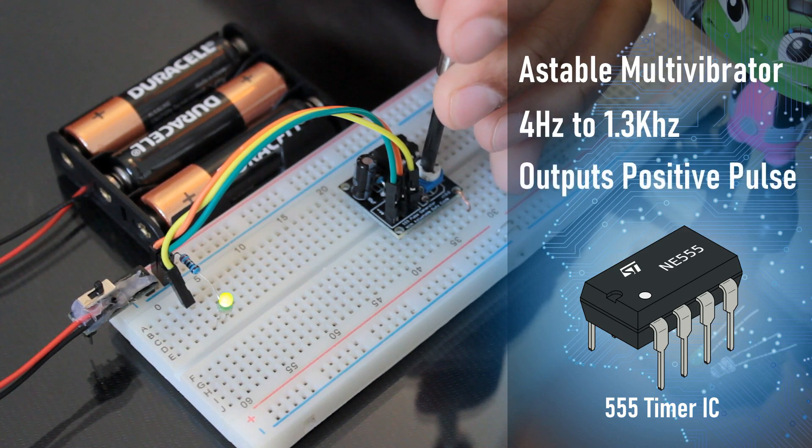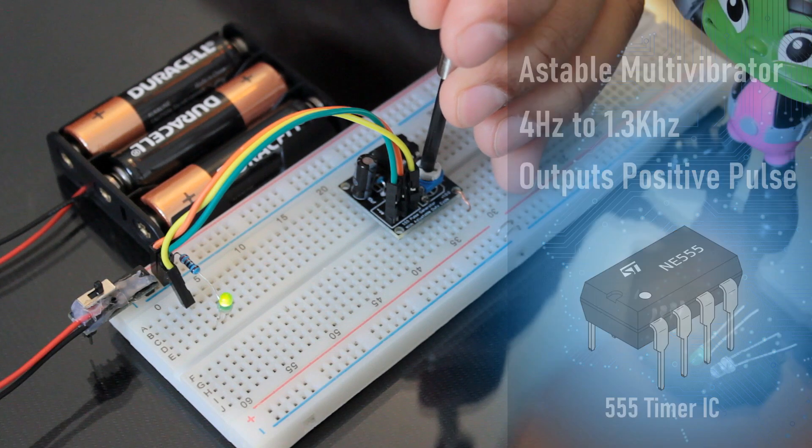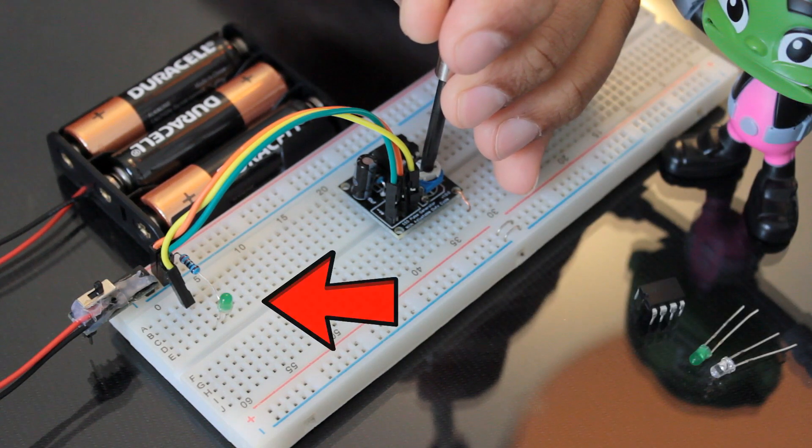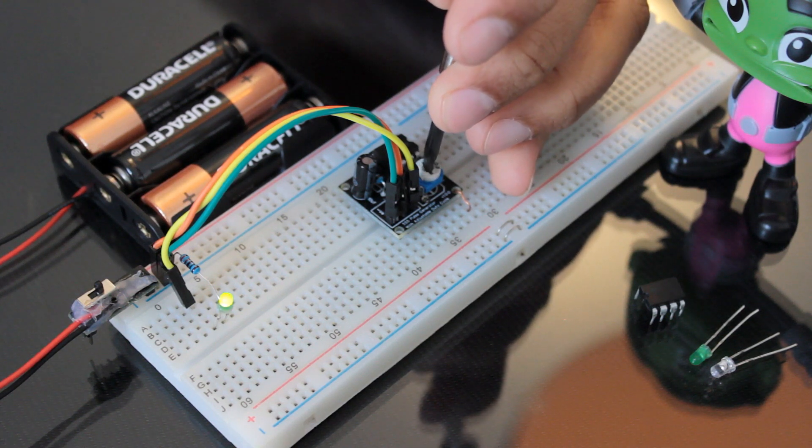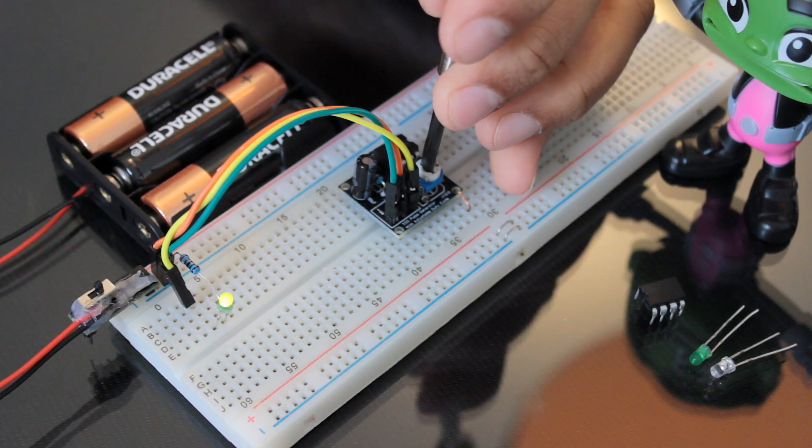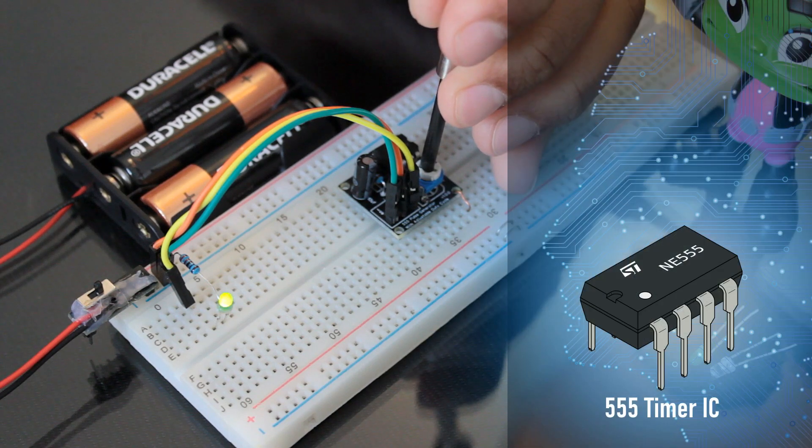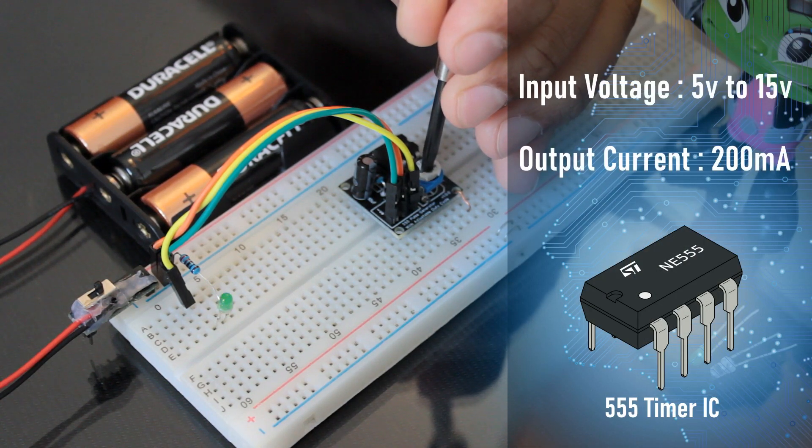The circuit can be used in any project that requires positive pulse. To demonstrate the operation, an LED is used at the output of the IC to show the visual indication of the output pulses. The output frequency of the pulses can be adjusted using a potentiometer. The circuit can be operated from any voltage between 5V to 15V DC.